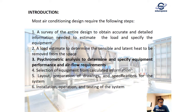After the psychrometric analysis, we have to match it with equipment selection — this is where we can specify how large our air handling units or fan coil units need to be, and identify whether a split unit or a package unit is required. Number five is the preparation of layout drawings and specifications for the system, and finally, installation, operation and commissioning or testing of the equipment.